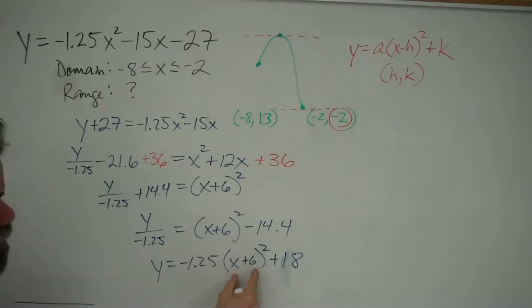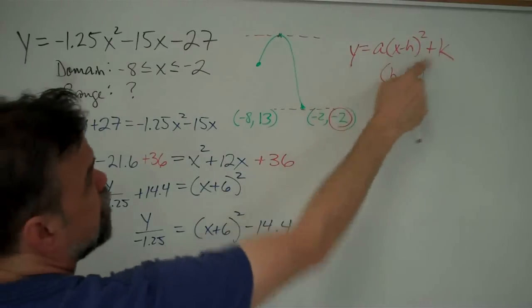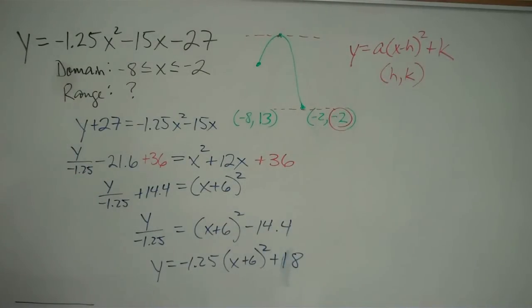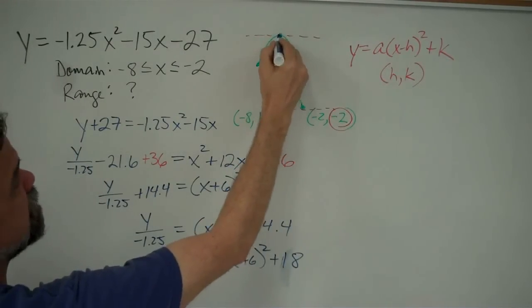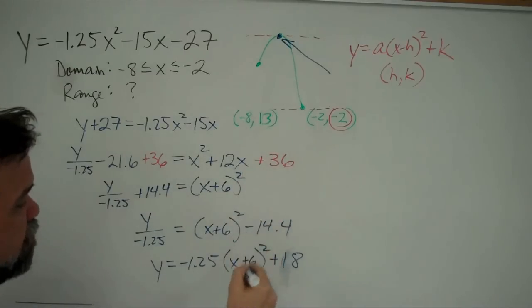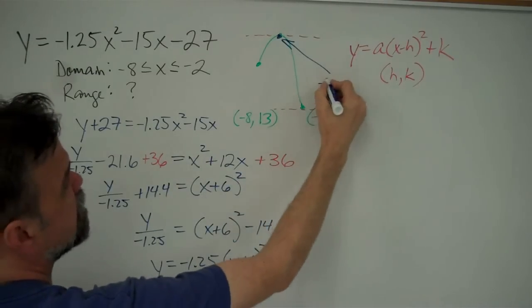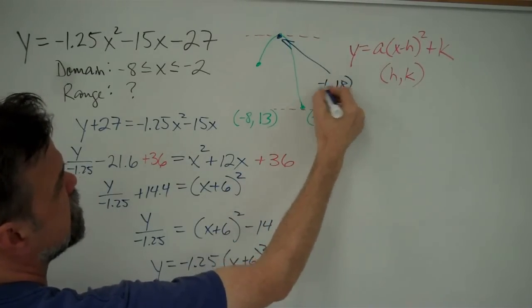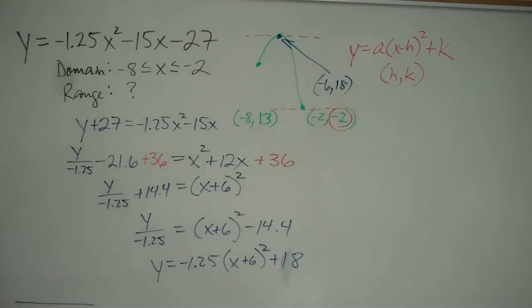So matching this to this form here, what that tells me is that my vertex, this point right there, has the coordinates negative 6 and 18. That's completing the square. That is not how I would do this problem.